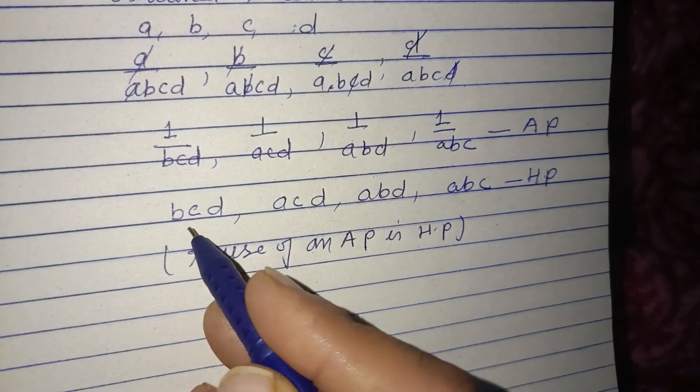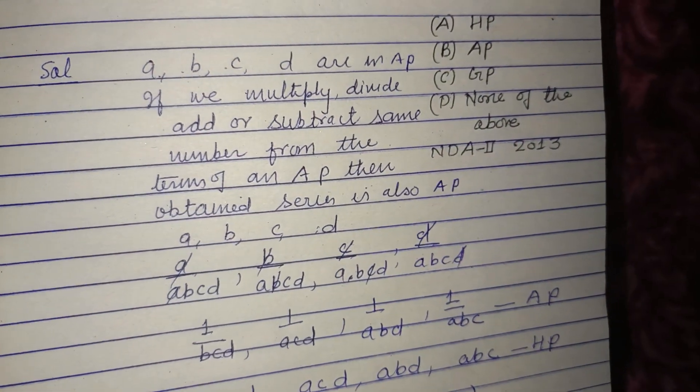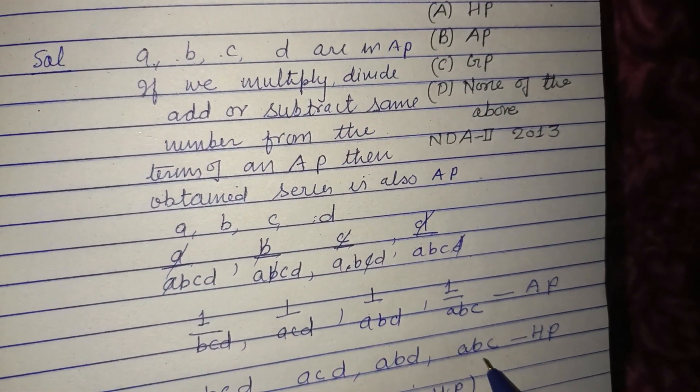Therefore ABC, ABD, ACD, and BCD are in harmonic progression.